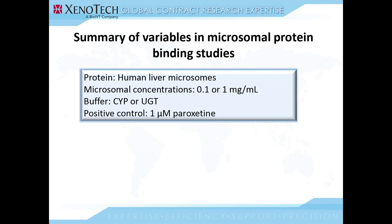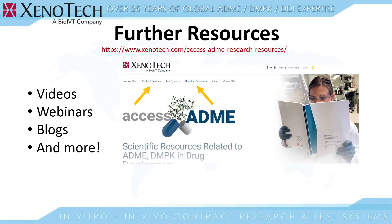Here is a summary of the variables for our protein binding studies. The protein would be human liver microsomes at concentrations of 0.1 or 1 mg per ml, depending on whether it's for a drug inhibition study or a drug metabolism study. The buffer used would be CYP or UGT buffer depending on the client's needs. The positive control would always be 1 micromolar paroxetine incubated for 24 hours. If you have any questions or would like to take advantage of the service we offer, please contact us for further details and we'll be happy to help you. Thank you.